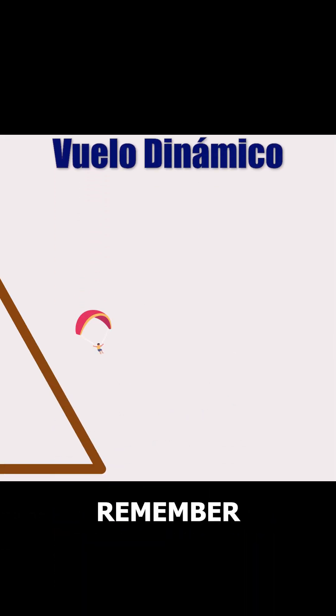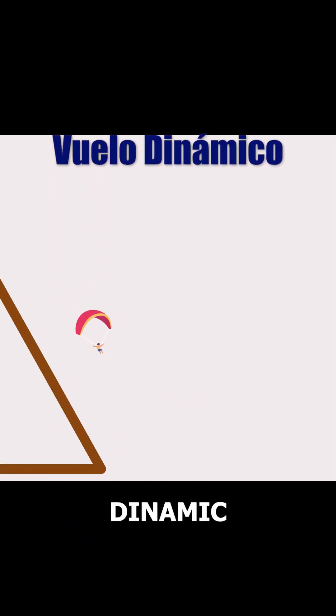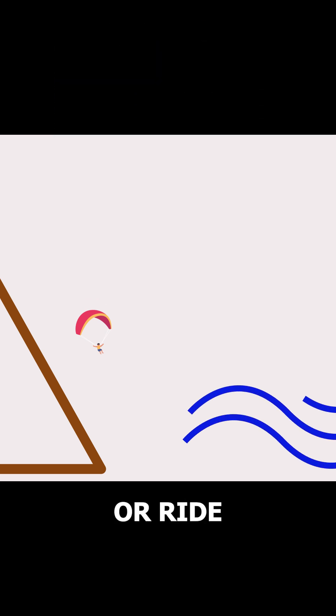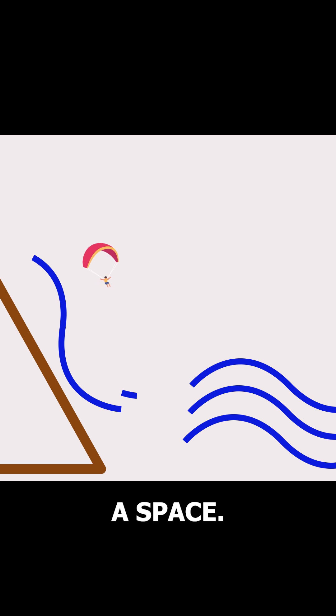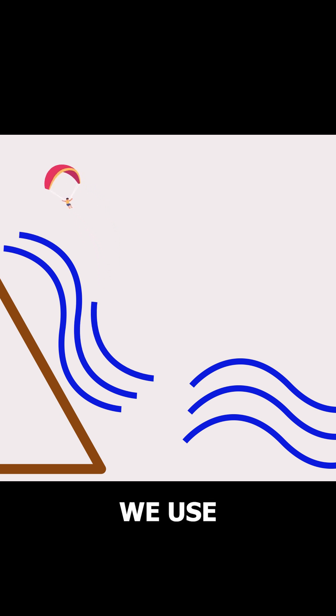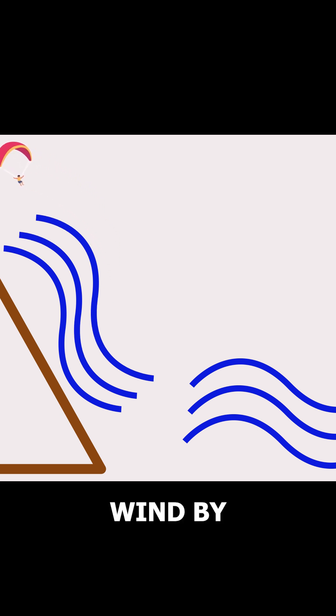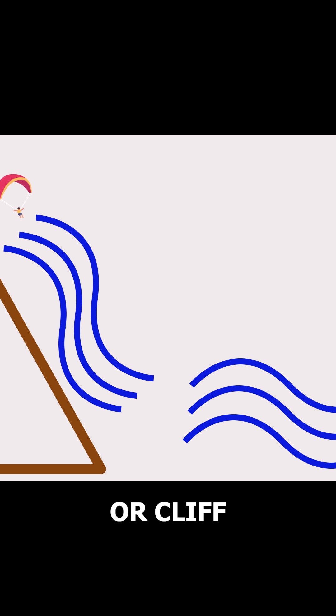First, let's remember that dynamic flight involves using the wind that hits a mountain or a ridge and rises along its face. We use this upward wind by flying parallel to the mountain or cliff.